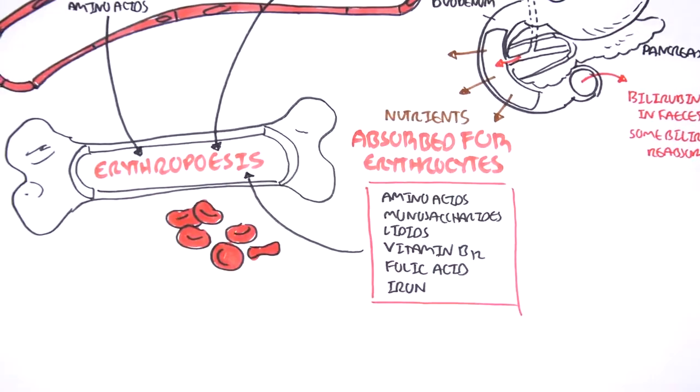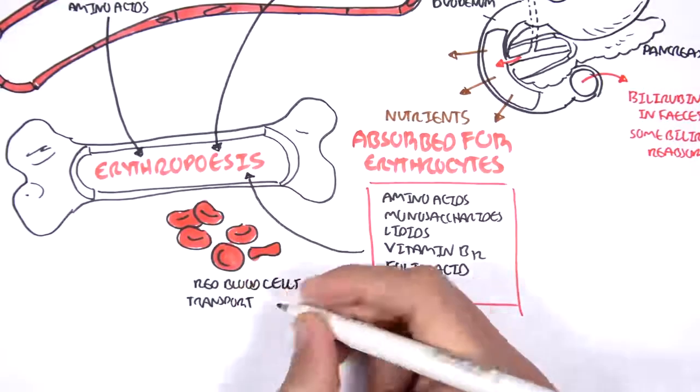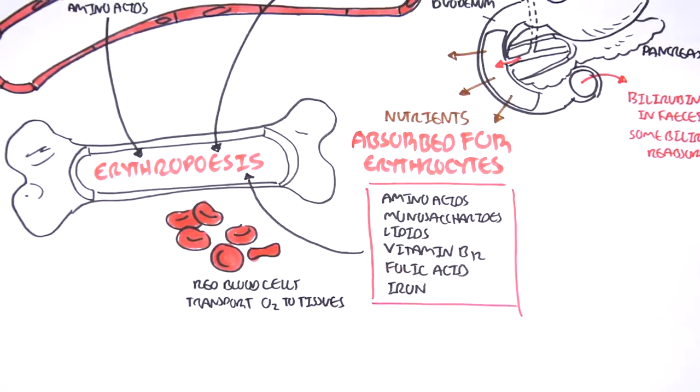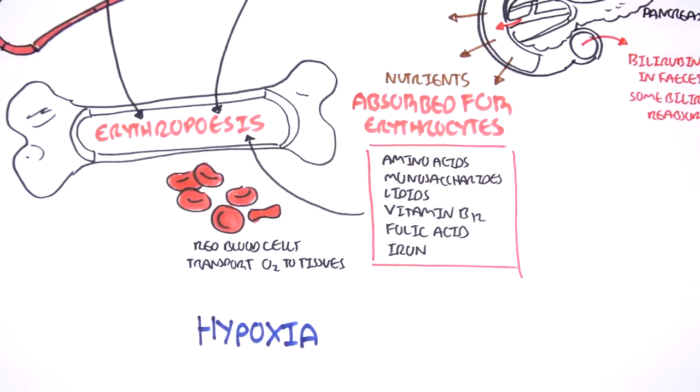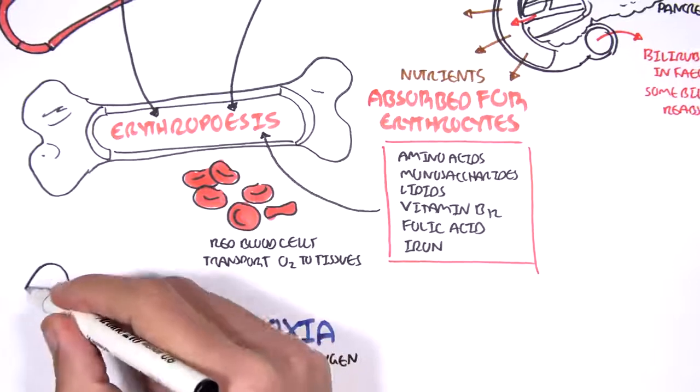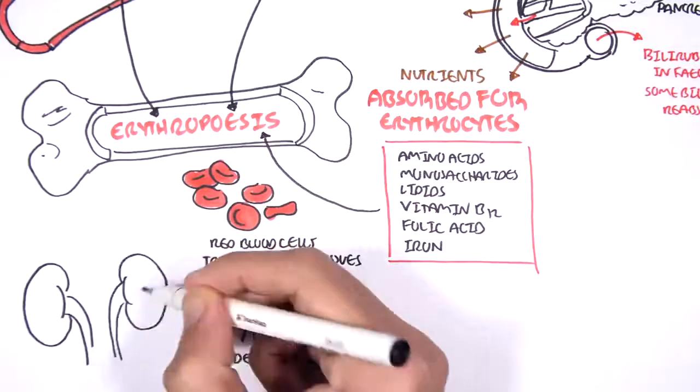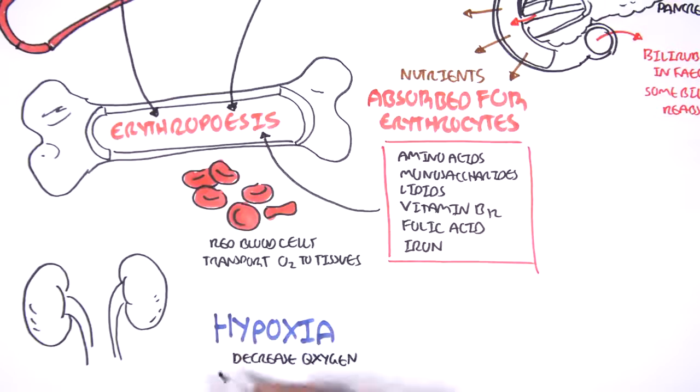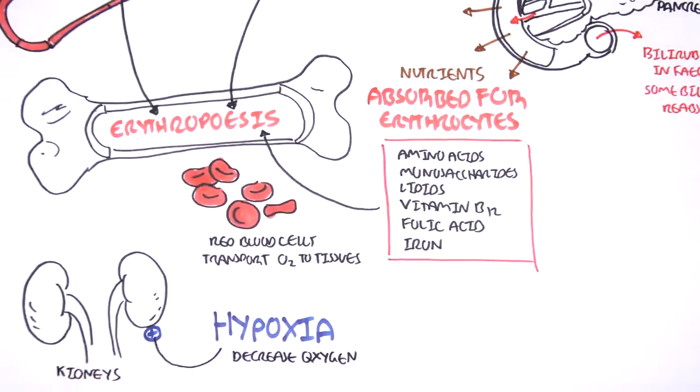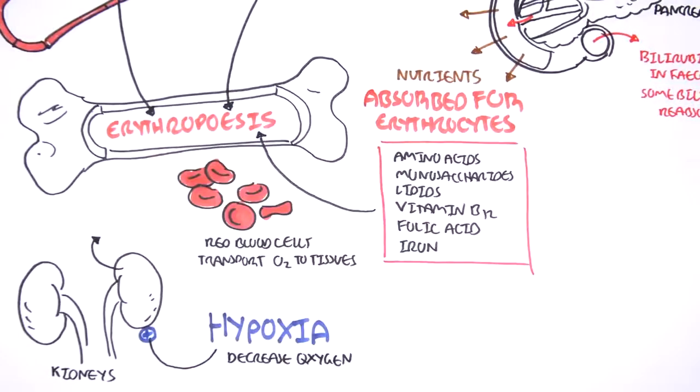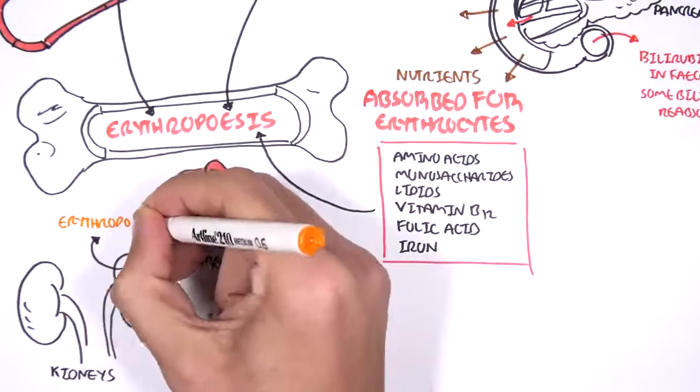And as I mentioned, the main function of red blood cells is to transport oxygen to tissues. So, now let's look at one important hormone or factor that influences erythropoiesis. In times of hypoxia, which is when we have a decrease in oxygen levels, this will stimulate the kidneys to produce an important hormone called erythropoietin. And erythropoietin is such an important hormone in erythropoiesis because it stimulates erythropoiesis.